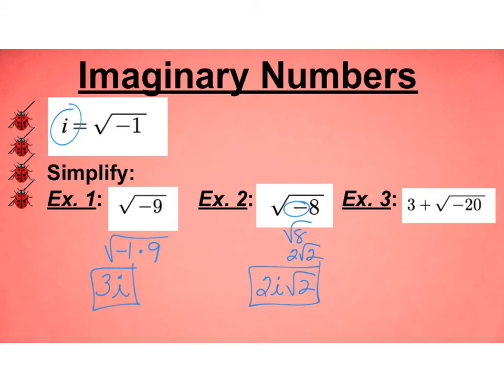In example 3, we have 3 + √(-20). The square root of 20 has the square root of 4 and 5, so this becomes 2√5. When we simplify it with an imaginary number, it becomes 3 + 2i√5.